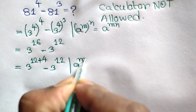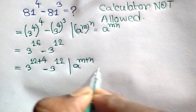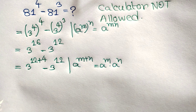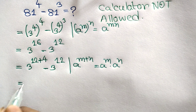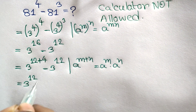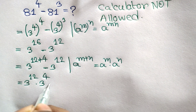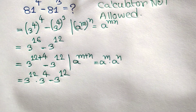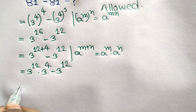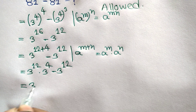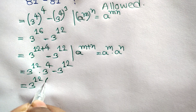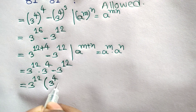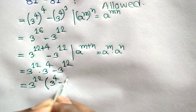We know that a to the power m plus n is equal to a to the power m times a to the power n. Applying this rule, we can write 3 to the power 12 times 3 to the power 4, minus 3 to the power 12. Taking out 3 to the power 12 as a common factor, we get 3 to the power 12 times the bracket 3 to the power 4 minus 1.